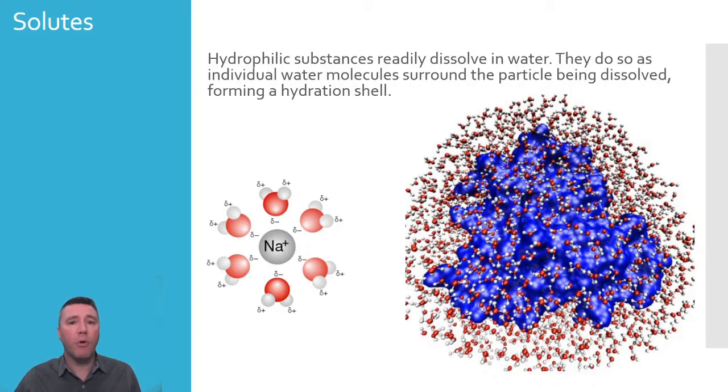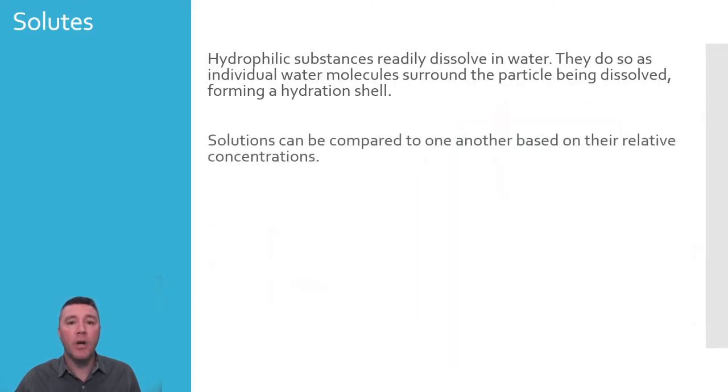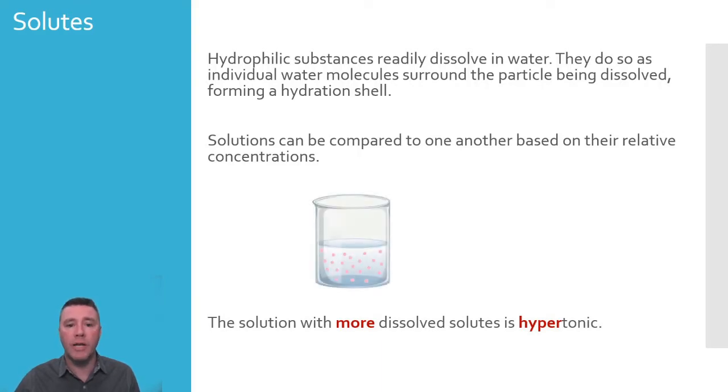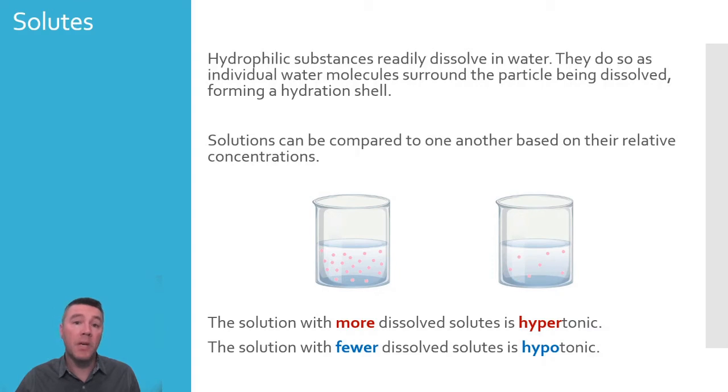We can therefore compare solutions to one another quantitatively based on their relative total concentrations. A solution that has a greater total concentration of dissolved solutes is referred to as hypertonic. Conversely, a solution with fewer total dissolved solutes is hypotonic. If two solutions were found to have equal solute concentrations, they would be referred to as isotonic.